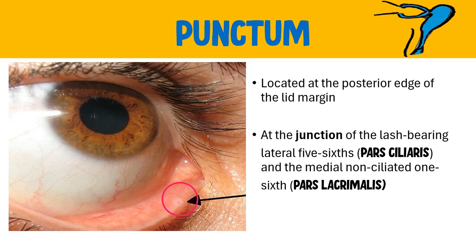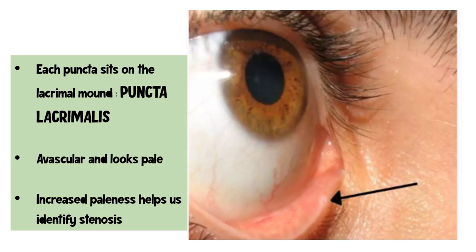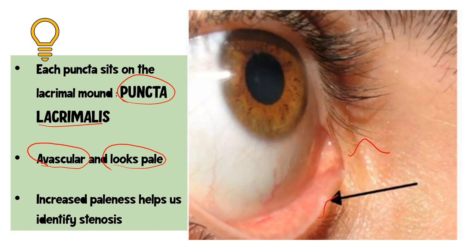The pars ciliaris is the lateral fifth of the eyelid which has lashes, whereas the medial part does not have cilia; the punctum sits at the junction of these two points. Each punctum sits on an elevated structure called the papilla lacrimalis. The papilla lacrimalis is avascular — devoid of blood vasculature — and therefore looks pale in appearance. Increased paleness can point toward possible punctal stenosis.